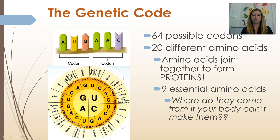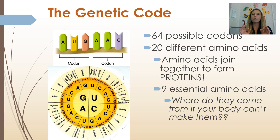There are 64 possible codons — combinations of three bases — and there are 20 different amino acids, so some amino acids are coded for by several codons. Amino acids join together to form proteins; a protein is a chain of amino acids. There are 11 amino acids your body can make and 9 amino acids your body cannot make. The 9 that your body cannot make are called essential amino acids. If your body can't make them, where do you think they come from? That's going to be a bonus question on your notes check — where do essential amino acids come from if your body can't make them?